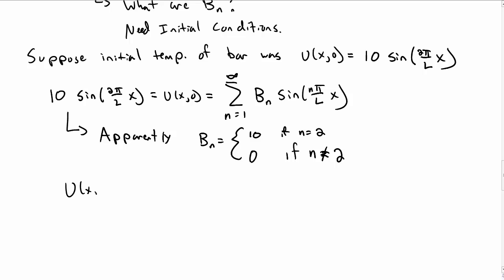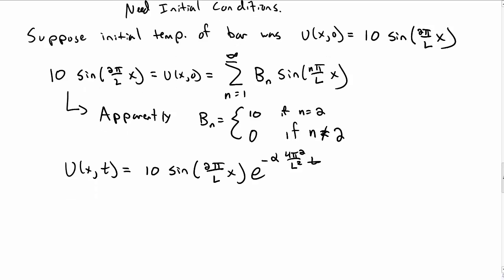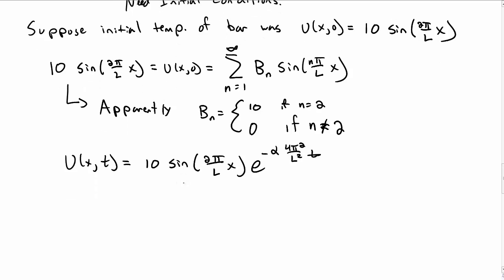In fact, it is the way we're going to solve this. To find our temperature at all times, we just have one term, 10 sine of 2 pi x over L, e to the minus alpha 4 pi squared over L squared T. Okay, 4 because we put n equal to 2, and that's an n squared up there.